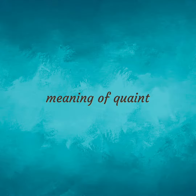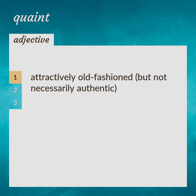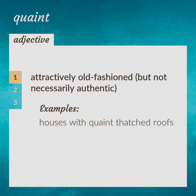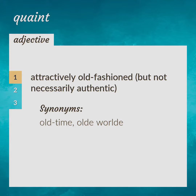Meaning of quaint. Attractively old-fashioned but not necessarily authentic. Houses with quaint thatched roofs. Old time, old world.